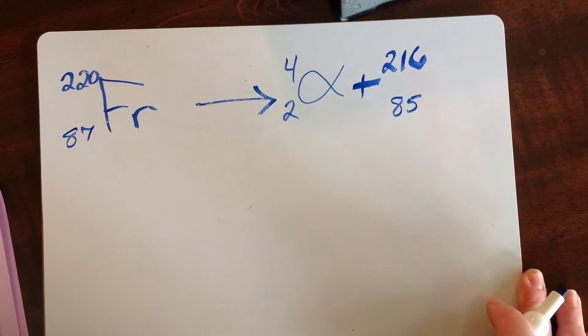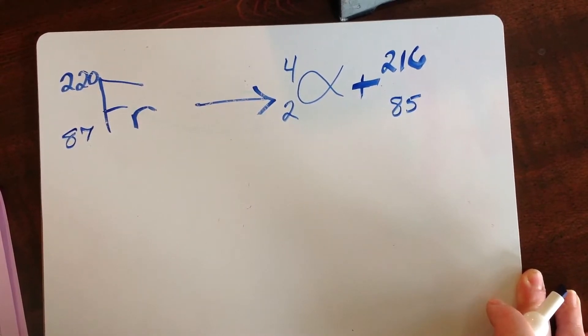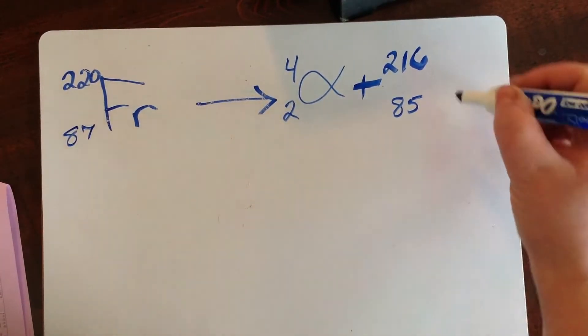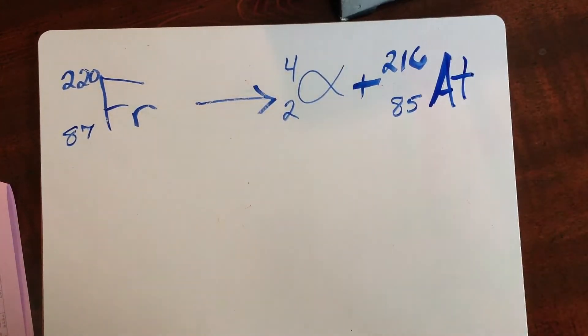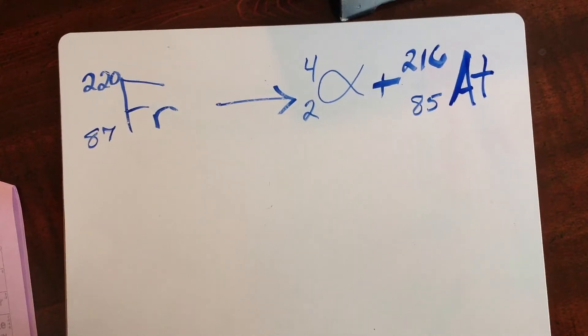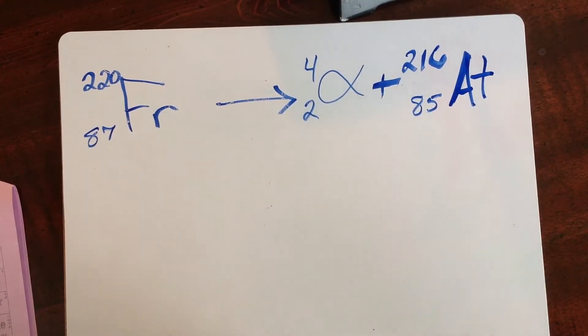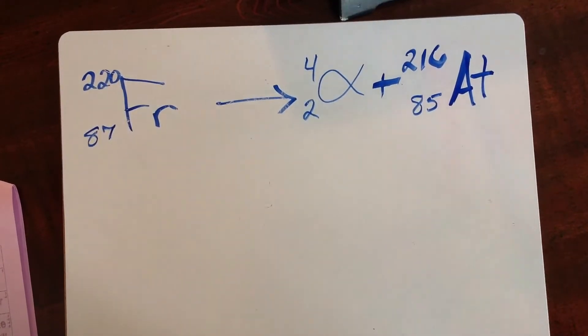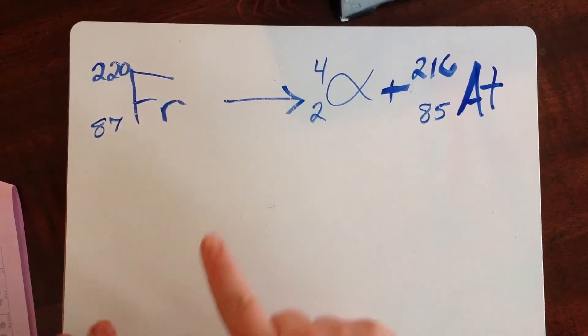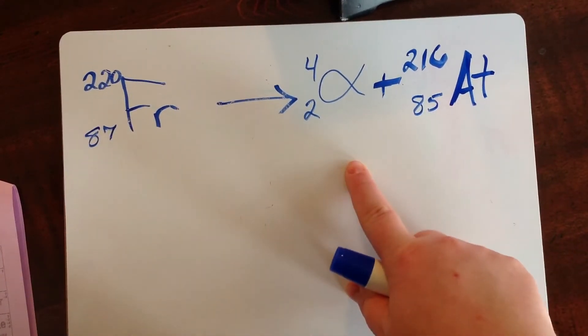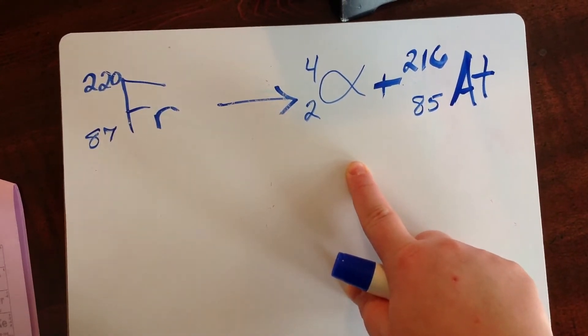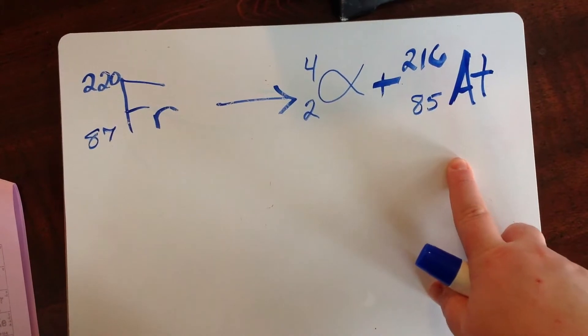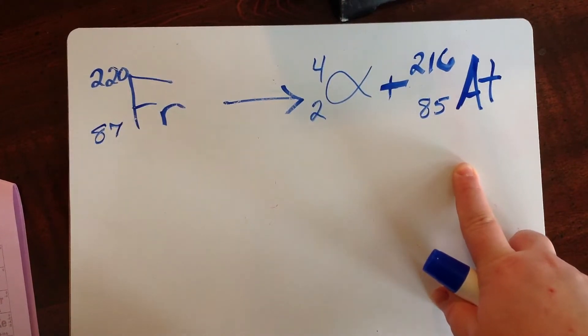Now for this one, since we know it's 85, we can look on our periodic table. And atomic number 85 is At. So this is the equation for the nuclear or the nuclear equation for the radioactive decay of francium 220 emitting an alpha particle, which we can tell it does by looking at table N. And then we have the daughter product that is produced as well.